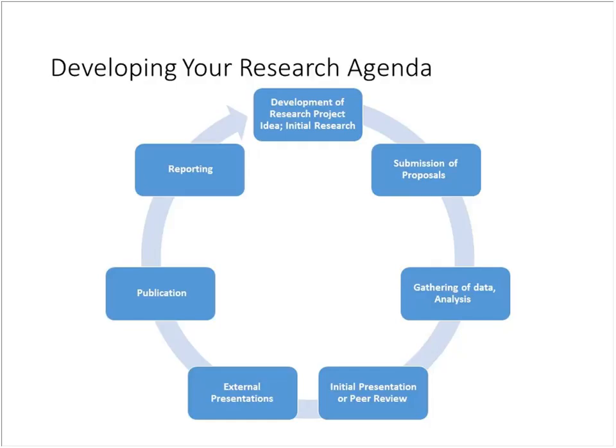We're going to shift gears and talk about developing your research agenda. We've tried to break down the research process that you go through with each project or paper and talk through what that looks like step-by-step. This is going to be different for every discipline, but we tried to make it a little more systematic so we can talk through what each step looks like and maybe give you some ideas or tips. The first step is development of a research project and idea and doing initial research — usually you have an idea, something you are passionate about, or something you've already studied that you want to look at from a different angle.